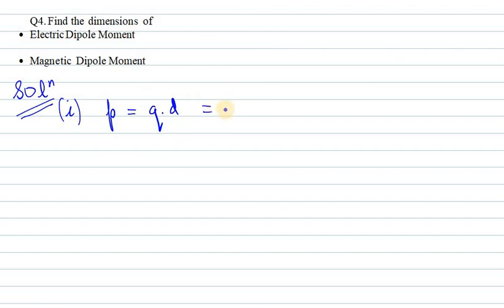Q is charge and D is distance. Q can be written as IT, where we have current and time, so IT. Distance can be defined as L.